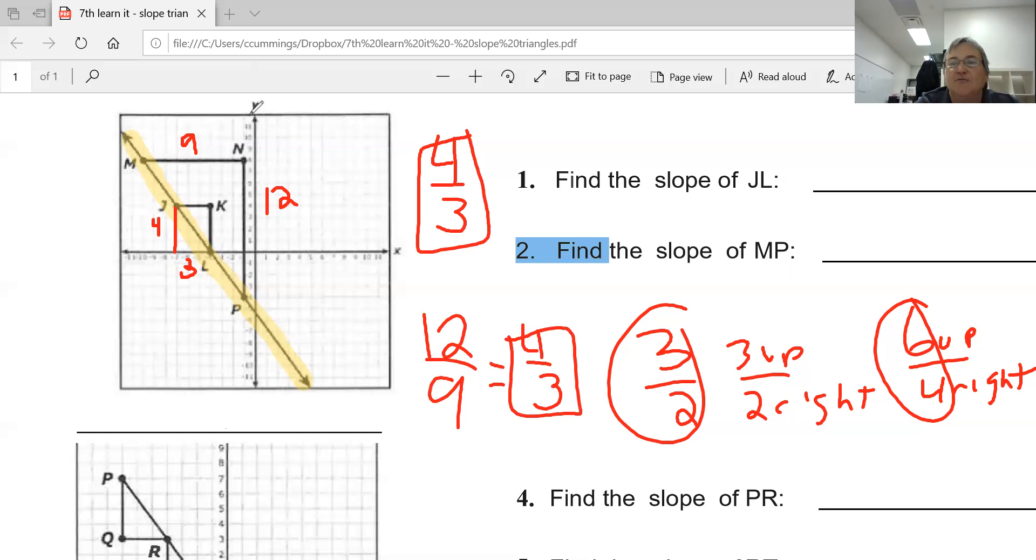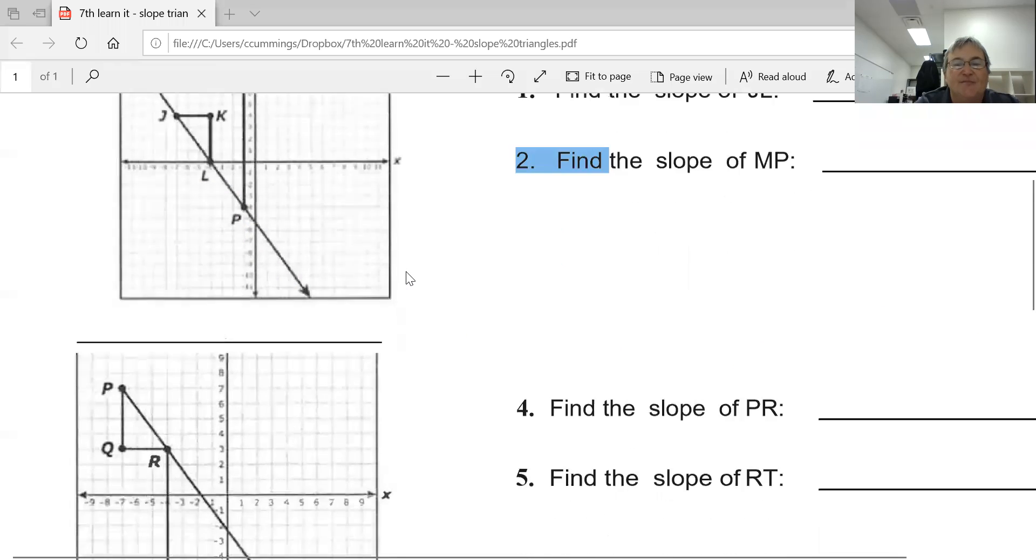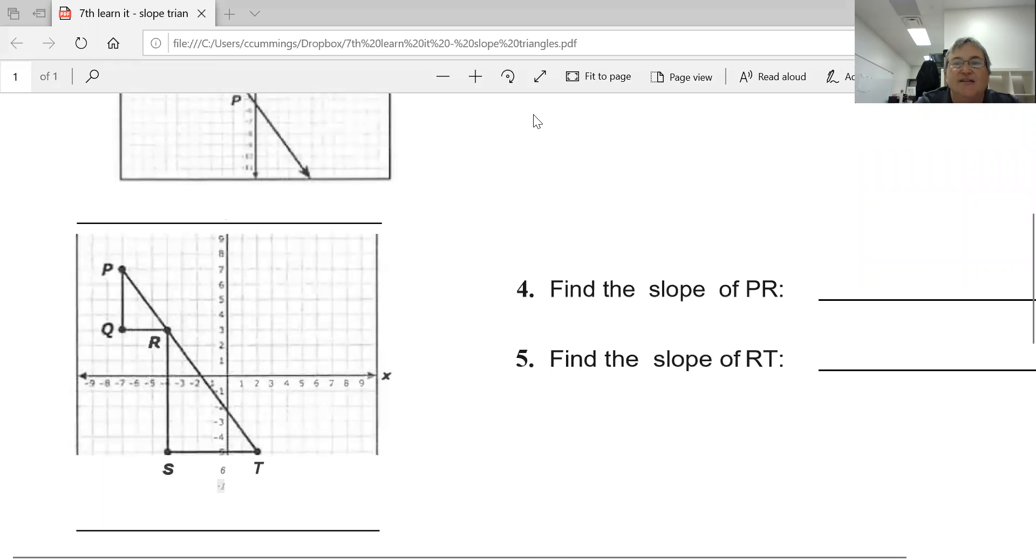We're going to do another example. So the line that you are looking at is this line right here. Notice that the line has negative slope, and I'm going from here to here which is my fall. And my fall is 4 spots, and my run is 3.